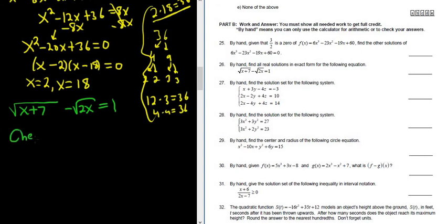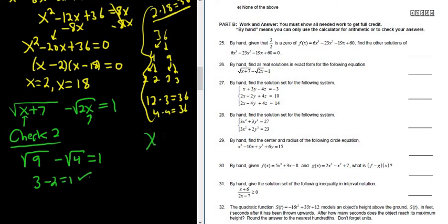Let's start by checking 2. So when you check, you have to go back to the original. So plugging in a 2 for all the x's, so we would get 2 plus 7, which is 9, minus the square root of 2 times 2, which is 4, and that should be equal to 1. So again, 2 plus 7 is 9, 2 times 2 is 4, so this would be 3 minus 2, which is equal to 1. Yes! So 2 is one of our answers.